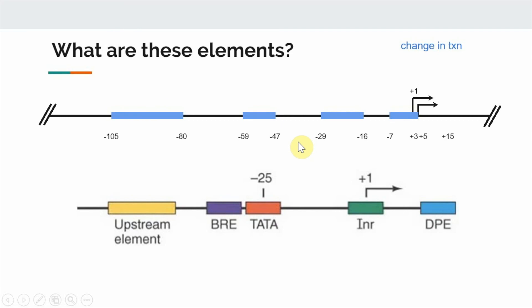Now let's try to map some of these elements back to the known elements on the general eukaryotic promoter we talked about earlier. Let's start with the more obvious one, from minus 29 to minus 16. It's centered on minus 25 and essential for transcription, so it's probably a TATA box, which are typically centered around minus 25.